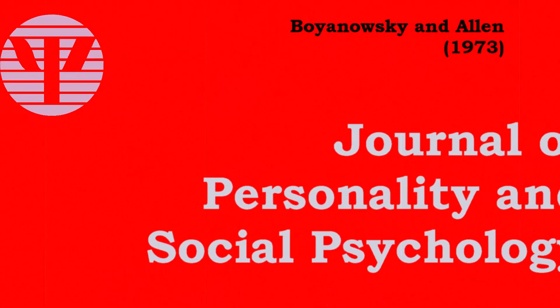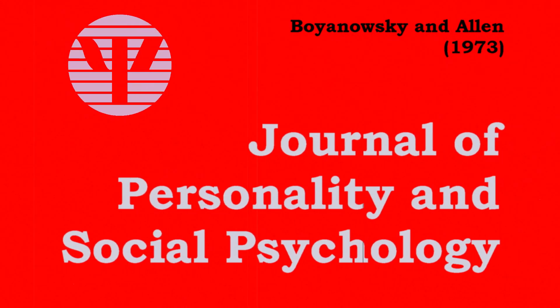To put this into an experimental example: Boyanowski and Allen in 1973 demonstrated that racially prejudiced people were more likely to be persuaded of something by a white person than by a black person, even when the information was exactly the same. They were more likely to be persuaded by someone perceived to be a member of their own group — in this case, a racial group.